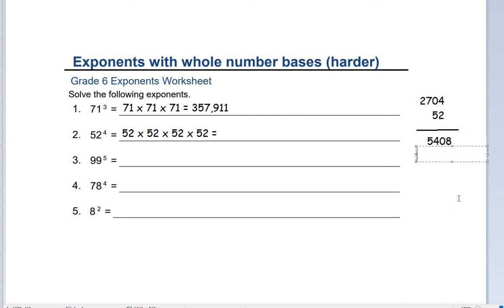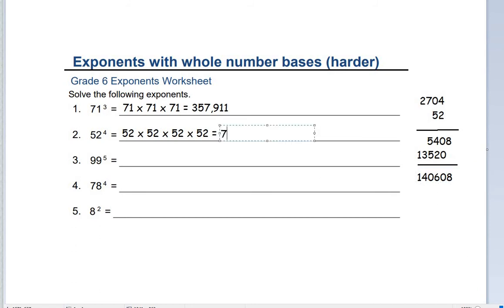Then we times it by 52 one more time — that's 140,608 times 52. That gives us a total of seven million three hundred and eleven thousand... let me check. Yeah, it should be sixteen — my fault. That's all right. There's a pretty big number there.